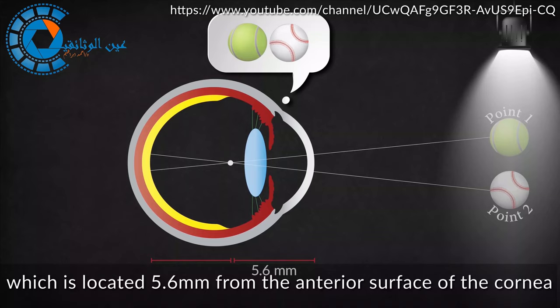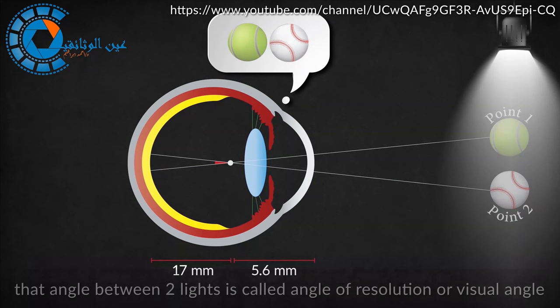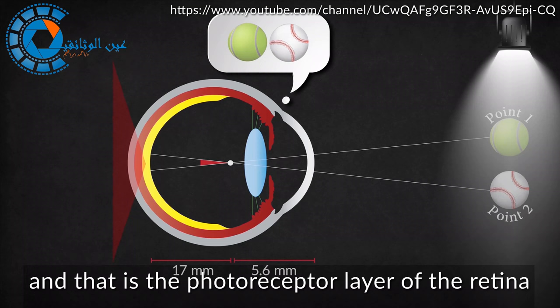Which is located 5.6 millimeters from the anterior surface of the cornea, and 17 millimeters in front of retina. That angle between two lights is called angle of resolution or visual angle.